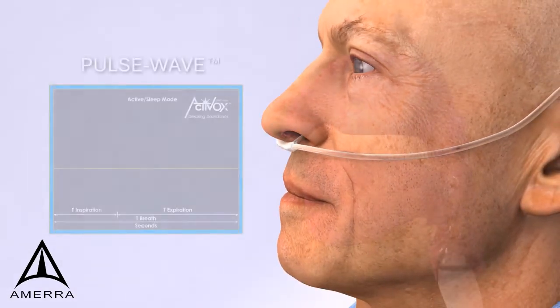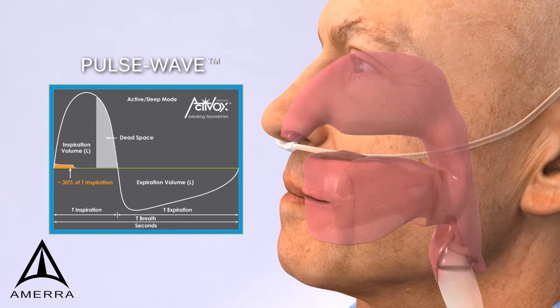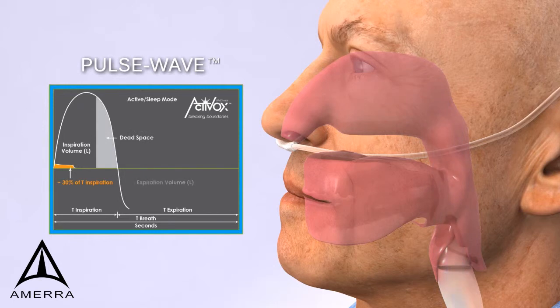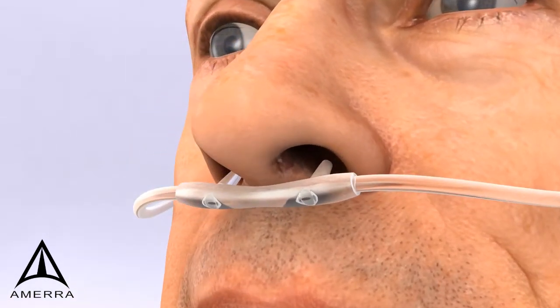The LifeChoice Activox POC utilizes a pulse wave delivery system triggered on demand by the patient during inhalation. Pulse wave delivers oxygen continuously during the first 30% of the inspiratory period, so what is delivered is received in the lungs with no retrograde flow. This type of delivery is so gentle that some patients report that they don't notice the oxygen being delivered during the inhalation phase.